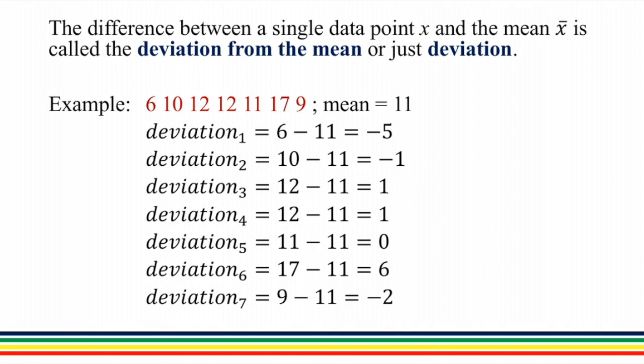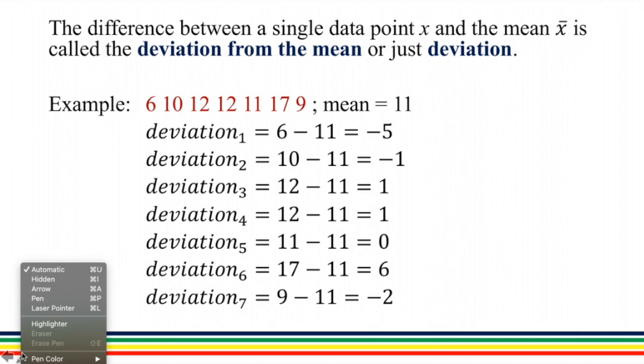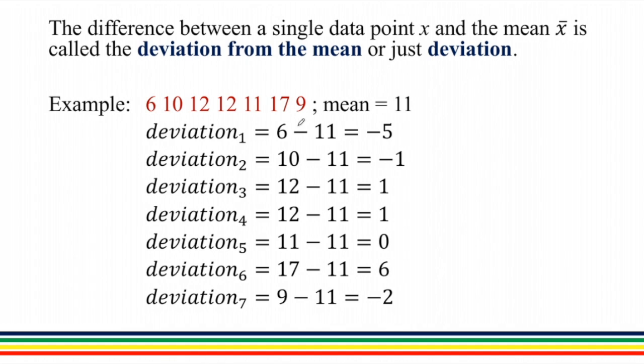For an example of this data set: 6, 10, 12, 12, 11, 17, and 9, the mean of this set is 11. For the first deviation, deviation 1, that is 6 minus the mean which is 11, equivalent to negative 5. And deviation 2 is 10 minus 11, or negative 1, and so on. If we add all the deviations, the sum of the deviations is equivalent to 0. Deviation means the difference from the mean of a sample data set, and the sum of all deviations in a data set is equivalent to 0.